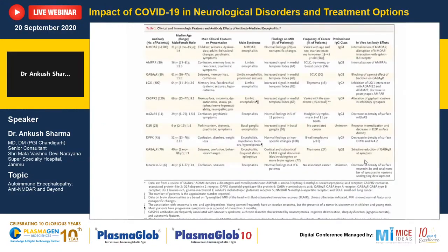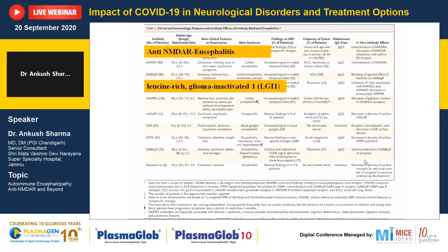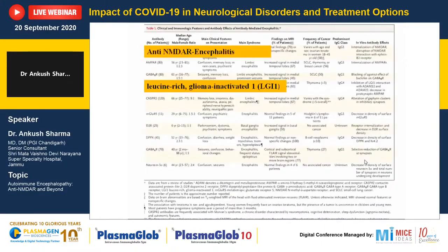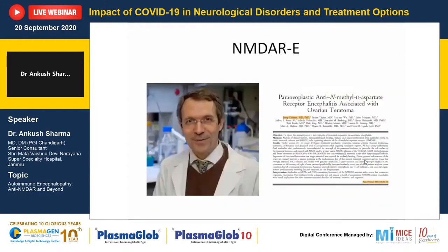Since 2005, nearly more than 16 antibodies have been described. The most commonly found in patients is NMDAR. The second most common is VGKC-complex related, that is leucine-rich glioma-inactivated 1 (LGI1) antibody. These present with different clinical scenarios.